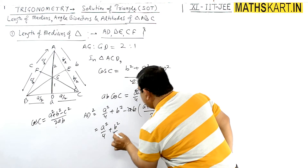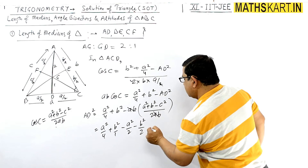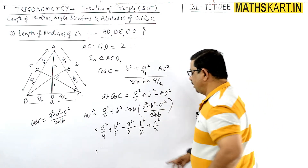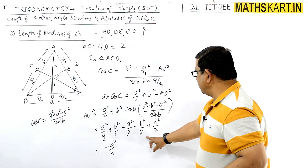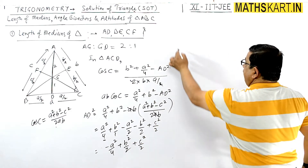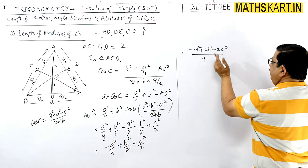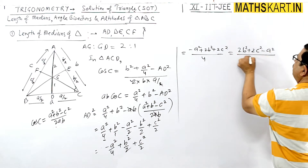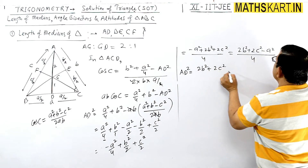After substituting and simplifying with LCM 4: AD² = A²/4 + B² − (a²/2 + b²/2 − c²/2). Taking LCM 4 gives: AD² = (−a² + 2b² + 2c²) / 4, which we write as AD² = (2b² + 2c² − a²) / 4.